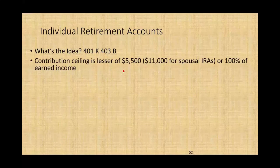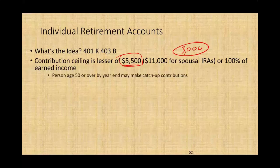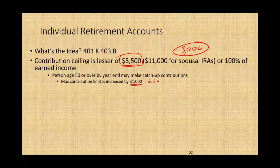The contribution ceiling is generally the lesser of $5,500 or 100% of your earned income. If you only earned $3,000 per year, you can only deduct $3,000 — you cannot deduct more than your earned income. But assuming you make more than $5,500, you are limited to $5,500. If you are age 50 or over, the government gives you an additional $1,000 catch-up contribution. So per year, you can contribute up to $6,500.